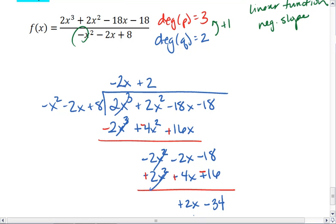We are left with positive 2x minus 34. This is our remainder. Because there's nothing left that we can multiply the x squared by to get it to be the 2x, or at least no positive exponent x that we can do that with.